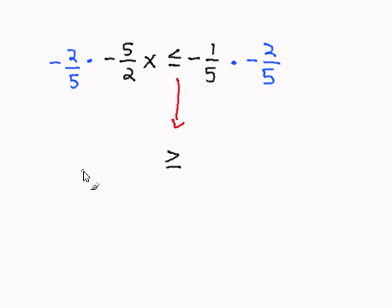Now I simply multiply my fractions. Negative 2 over 5 times negative 5 over 2. The 2 will cancel out and the 5 will cancel out. And the negative times the negative will make this a positive. And you're going to end up with positive x.